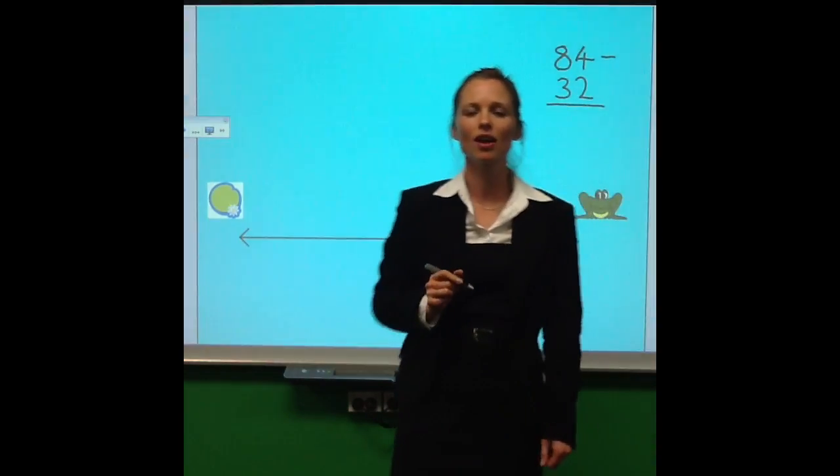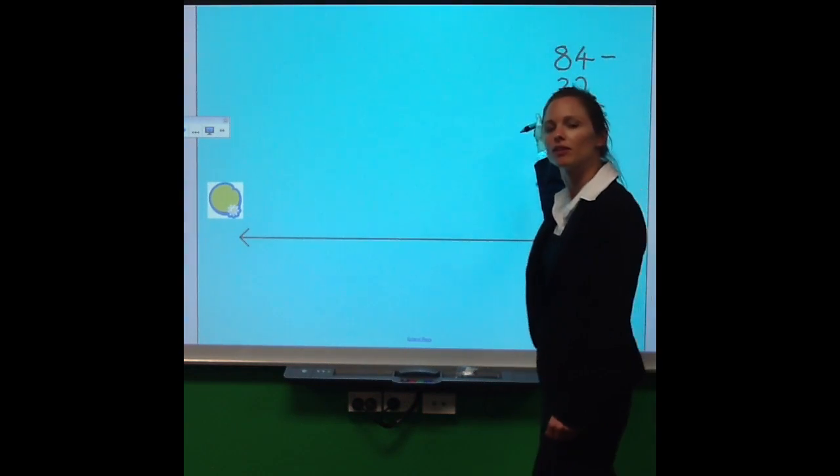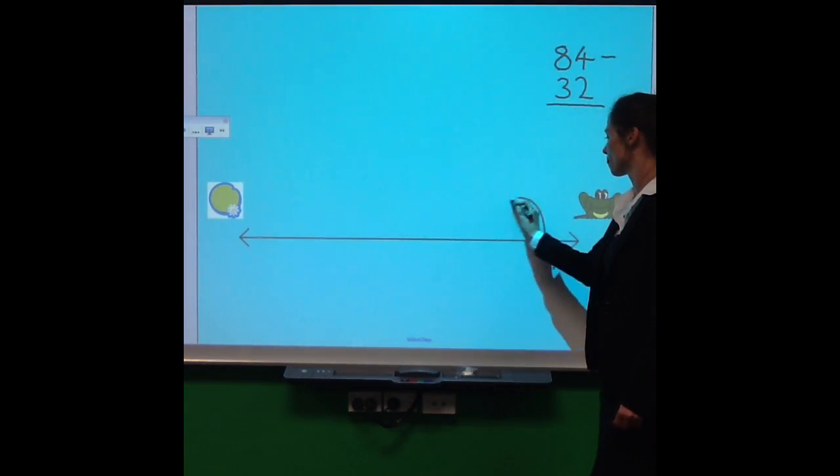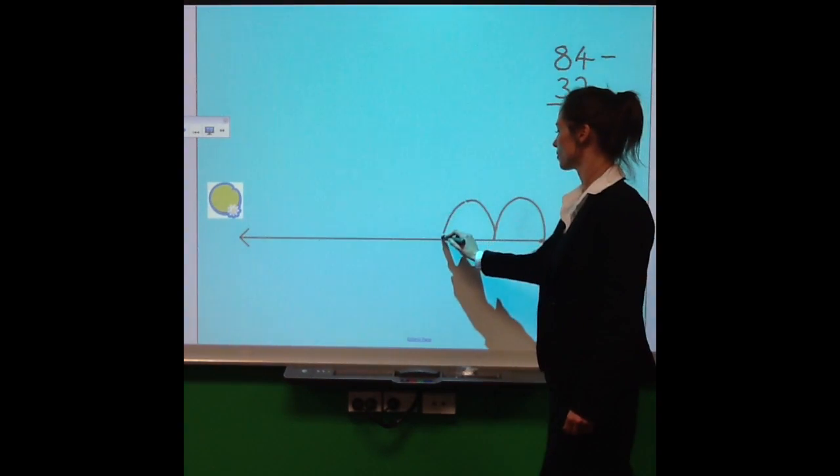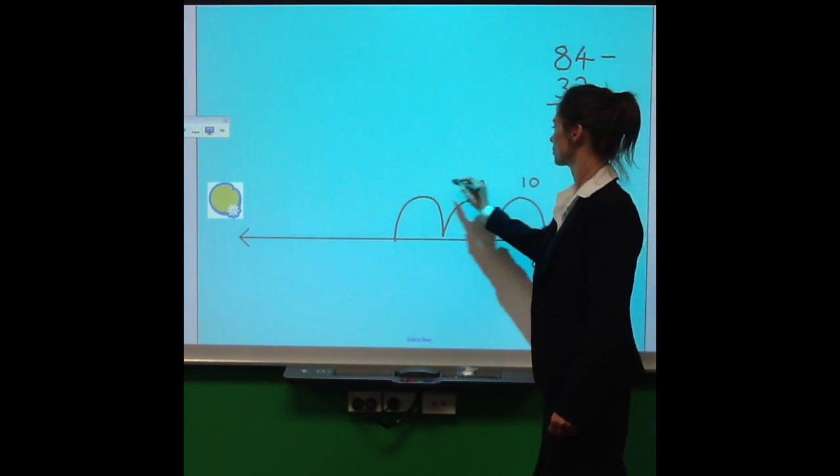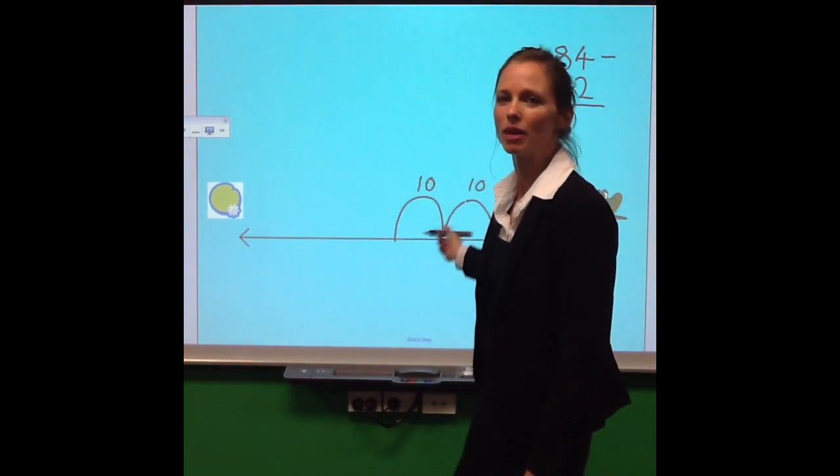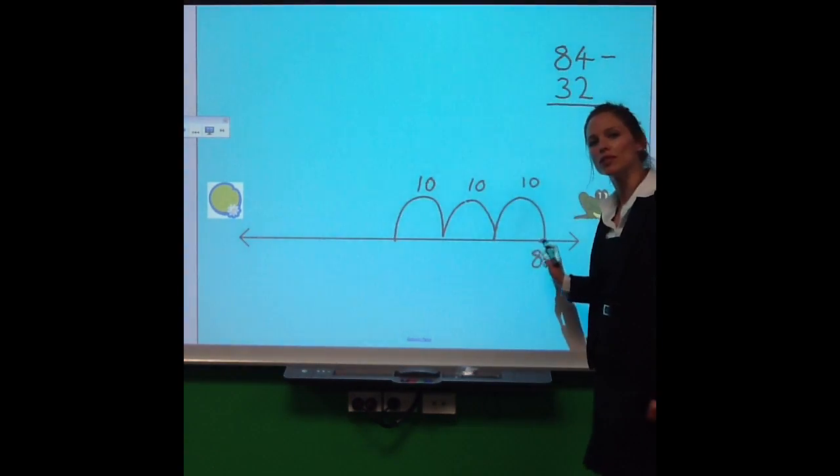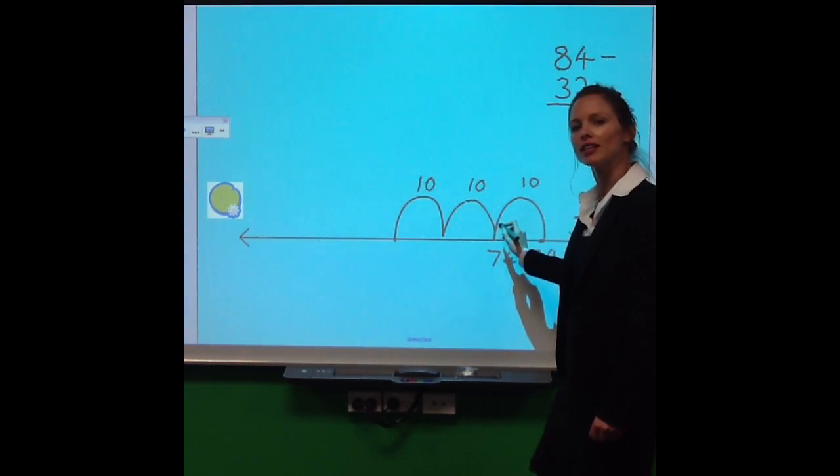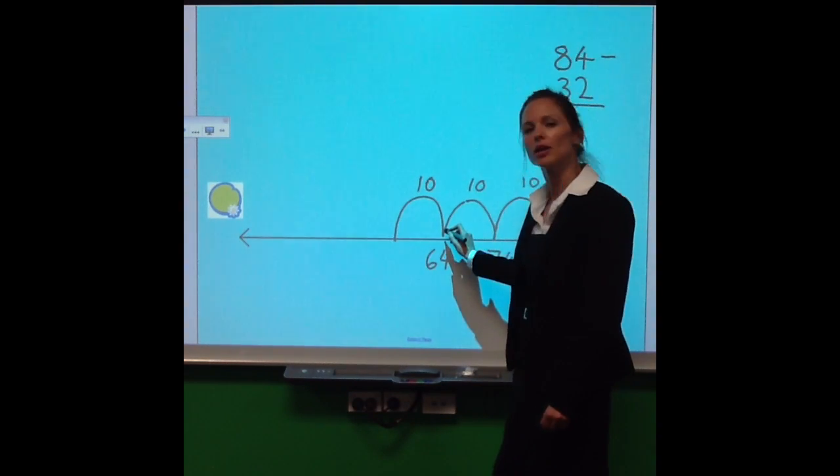Now just like the first time, we're going to have a look at our tens. How many tens have we got in our second number? We've got three. Three tens is 30, so we're going to jump three tens. And again, I'll plot those numbers underneath, so we keep track of where we're up to. So 84 take away 10 is 74. Take away another 10 is 64. Take away another 10 is 54.